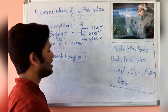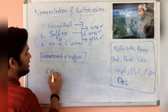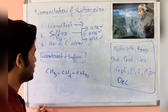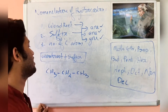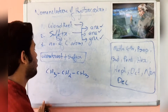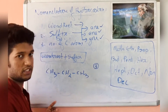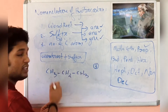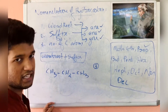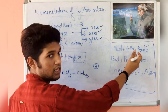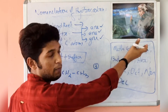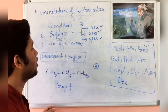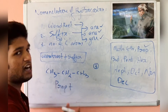Now let's take an example: CH3-CH2-CH3. First, count the number of carbon atoms present in the compound — one, two, three — three carbon atoms are present. So we will take 'prop' as the word root because there are three carbon atoms. So: prop plus... now we need to add a suffix.